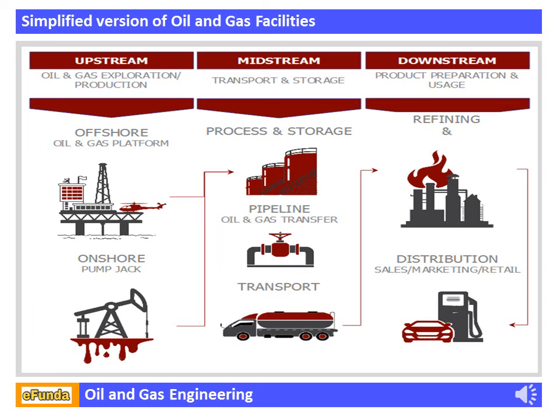The downstream sector commonly refers to the refining of petroleum crude oil and processing and purifying of raw natural gas, as well as the marketing and distribution of products derived from crude oil and natural gas. The downstream sector touches consumers through products such as gasoline, petrol, kerosene, jet fuel, diesel oil, heating oil, fuel oil, lubricants, waxes, natural gas, and liquefied petroleum gas (LPG).